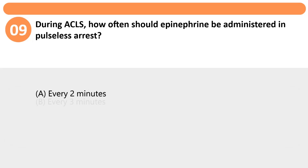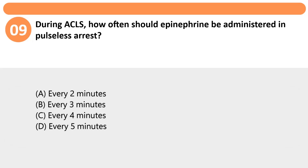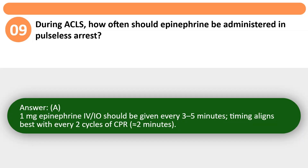During ACLS, how often should epinephrine be administered in pulseless arrest? A. Every 2 minutes. B. Every 3 minutes. C. Every 4 minutes. D. Every 5 minutes. Answer: A. 1 mg epinephrine IV/IO should be given every 3-5 minutes; timing aligns best with every 2 cycles of CPR, approximately every 2 minutes.